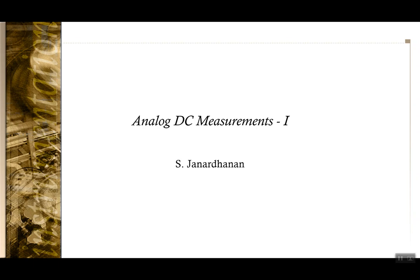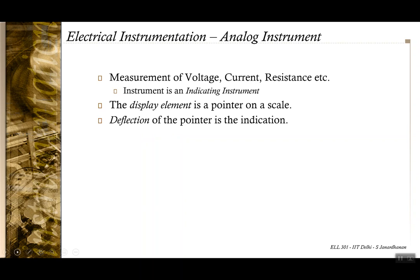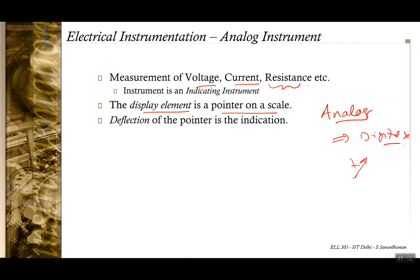In today's class, we'll be starting on various types of measuring instruments. The first set we'll be dealing with are analog DC instruments — instruments that measure DC currents, DC voltages, and resistances. These use an analog principle, meaning their display is not digital. Since they're analog, the indicating mechanism is a pointer on a scale, and the deflection of the pointer is the indication.